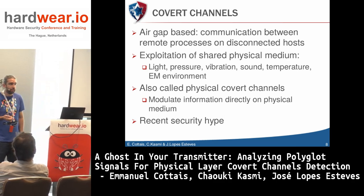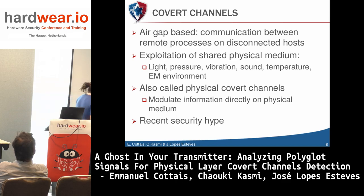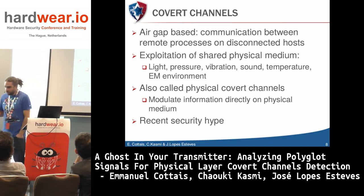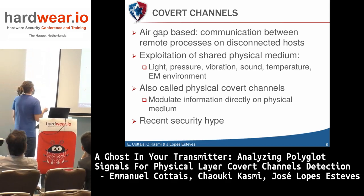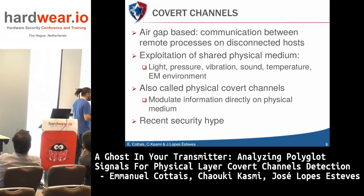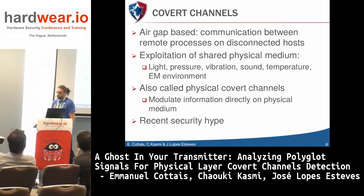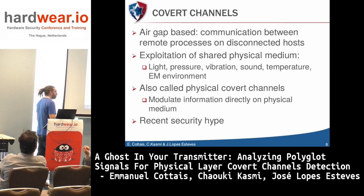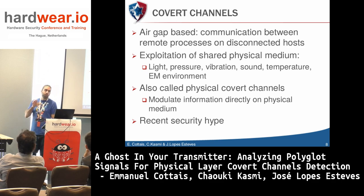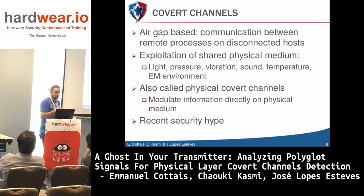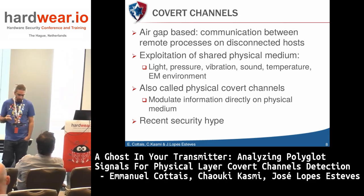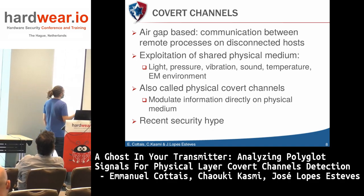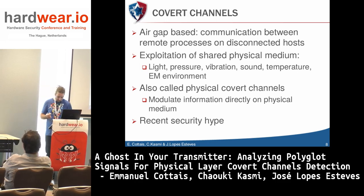The third family is air gap covert channels. Here, two hosts are completely disconnected from any network and you try to re-establish communication between two malicious processes, one on each host. Air gap covert channels require using a shared physical medium to modulate information on. Some examples include using light — one host has a webcam, one has an LED, and they can exchange information by making the LED blink and monitoring the ambient light.